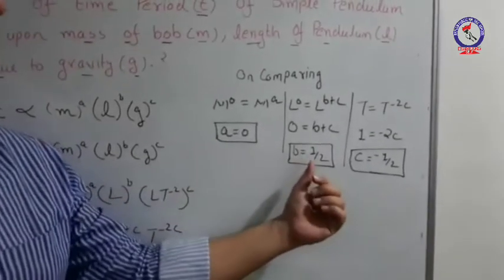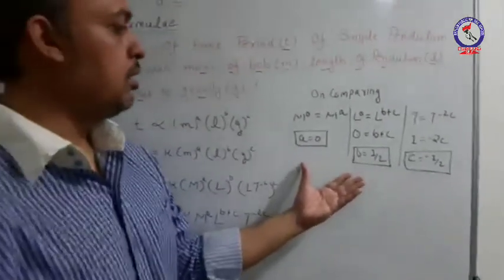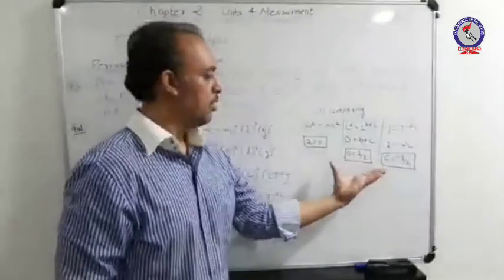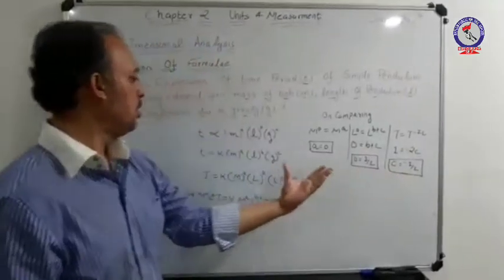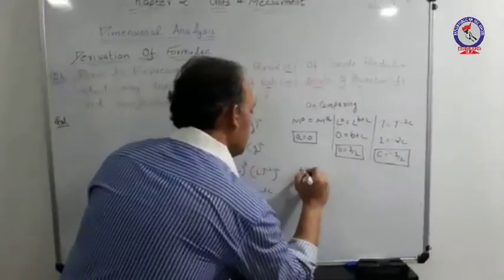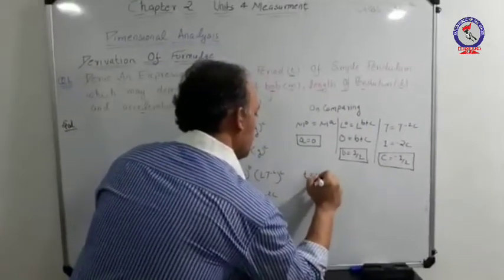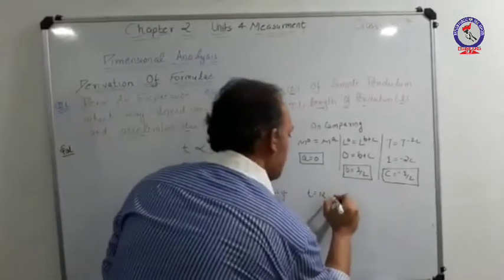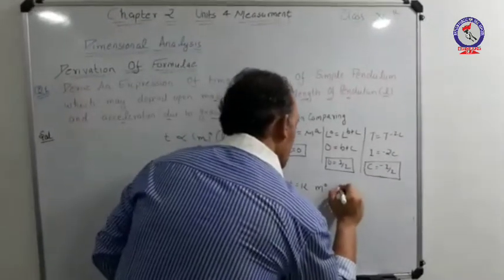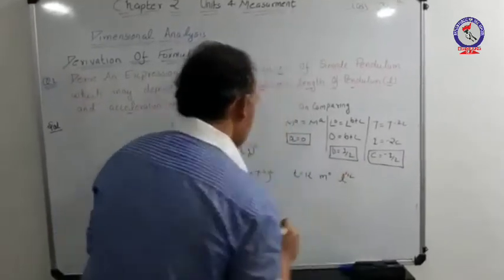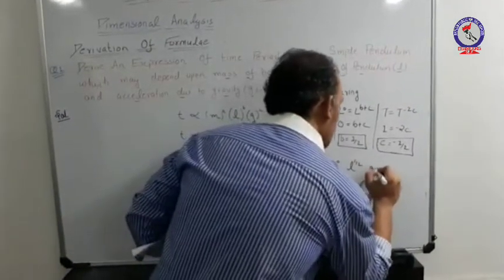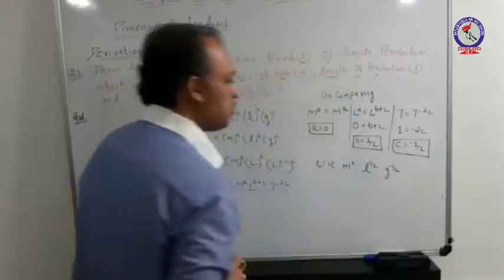By comparing dimensions on LHS and RHS we have calculated the values: A equals 0, B equals 1/2, and C equals minus 1/2. Substituting these values into the main equation, we have T equals K times M to the power 0, L to the power 1 by 2, and G to the power minus 1 by 2.